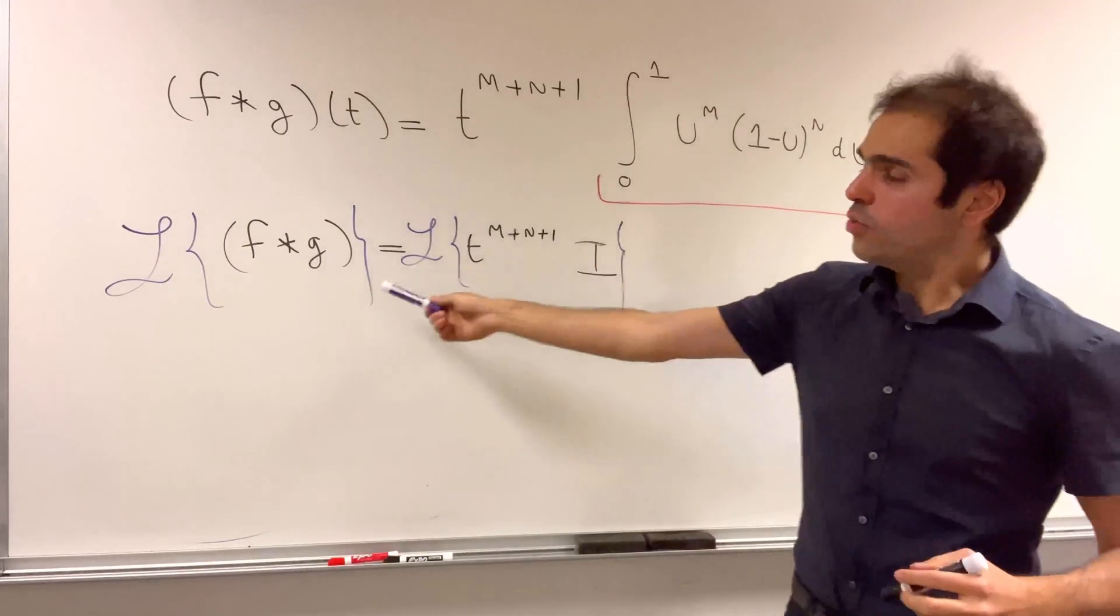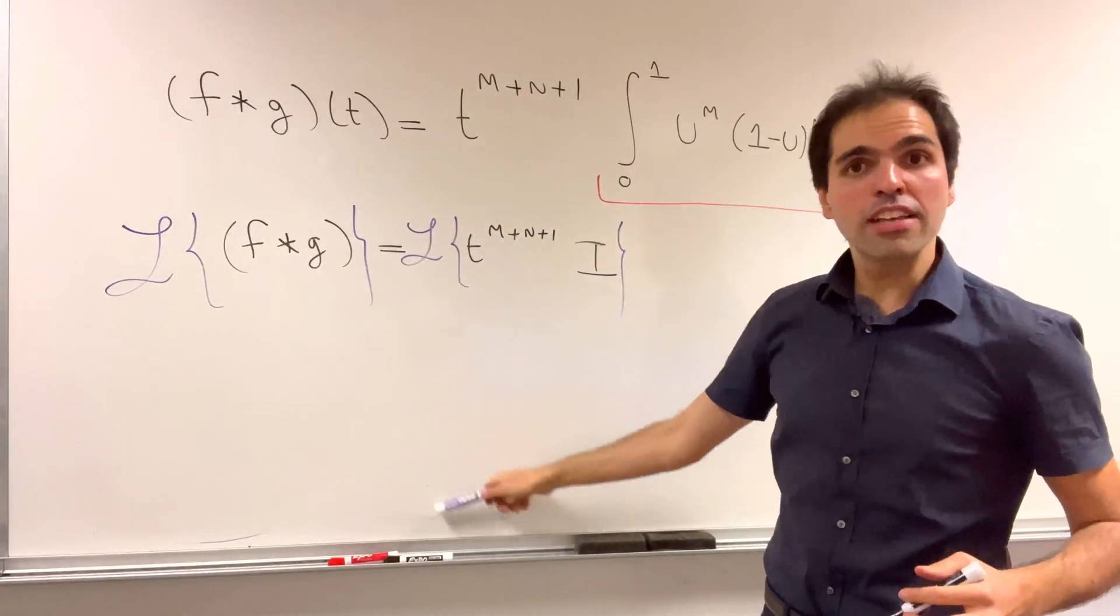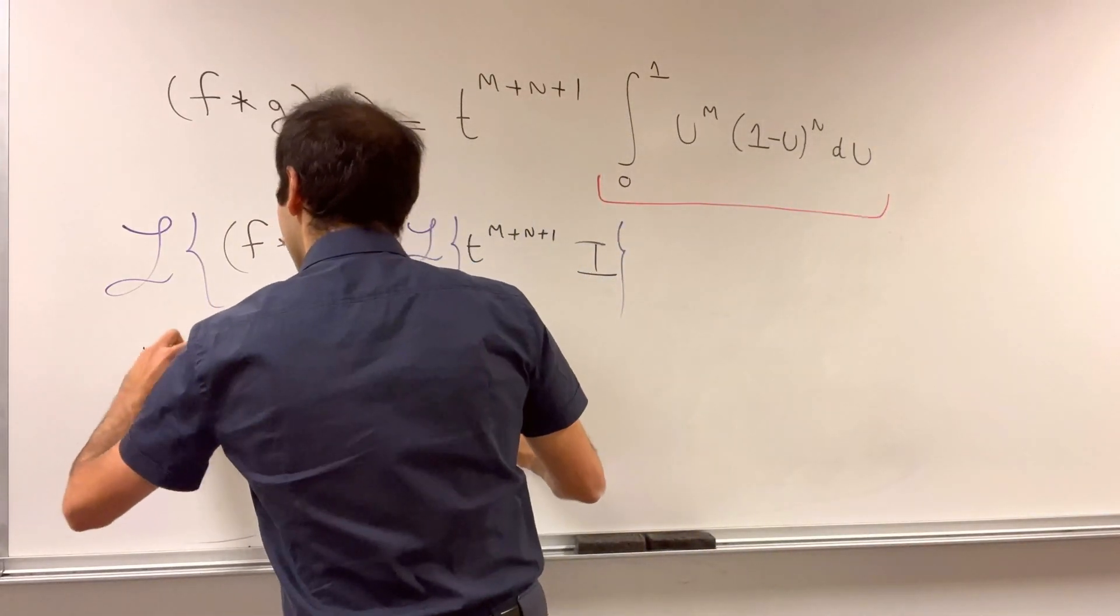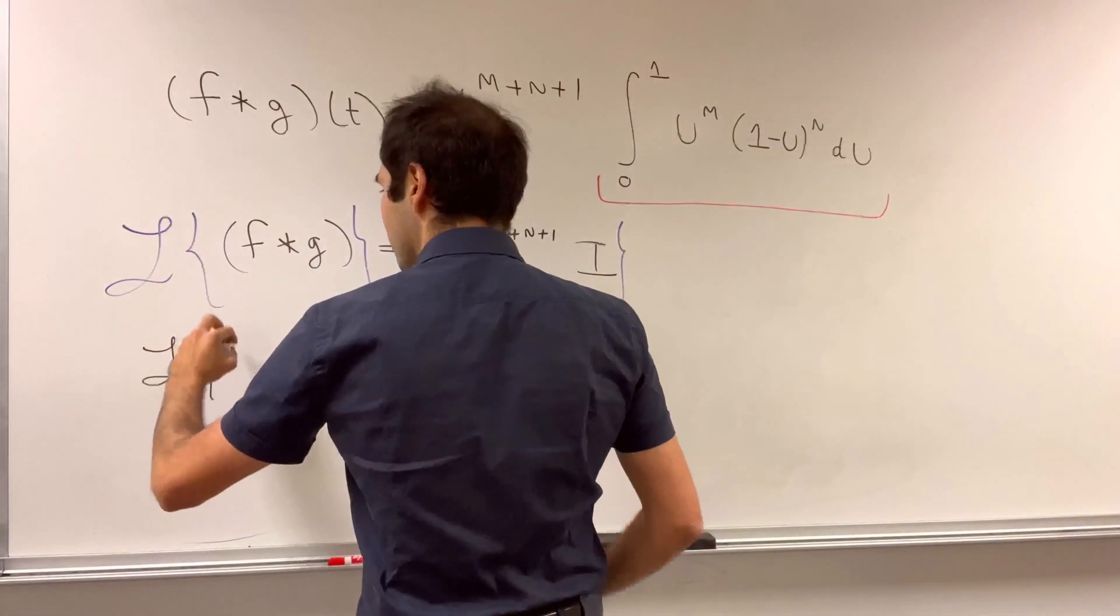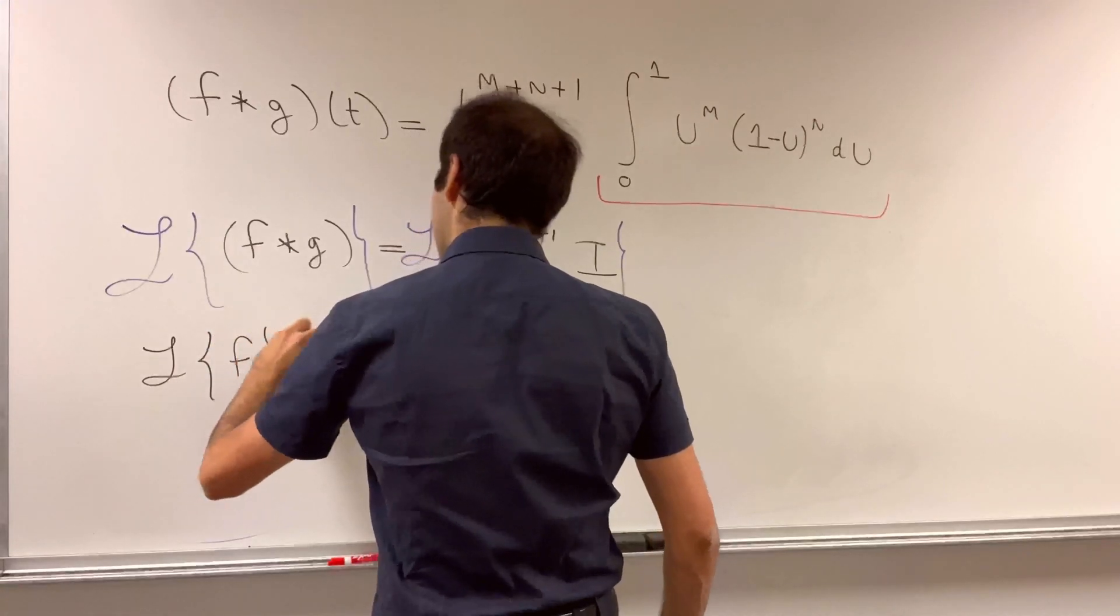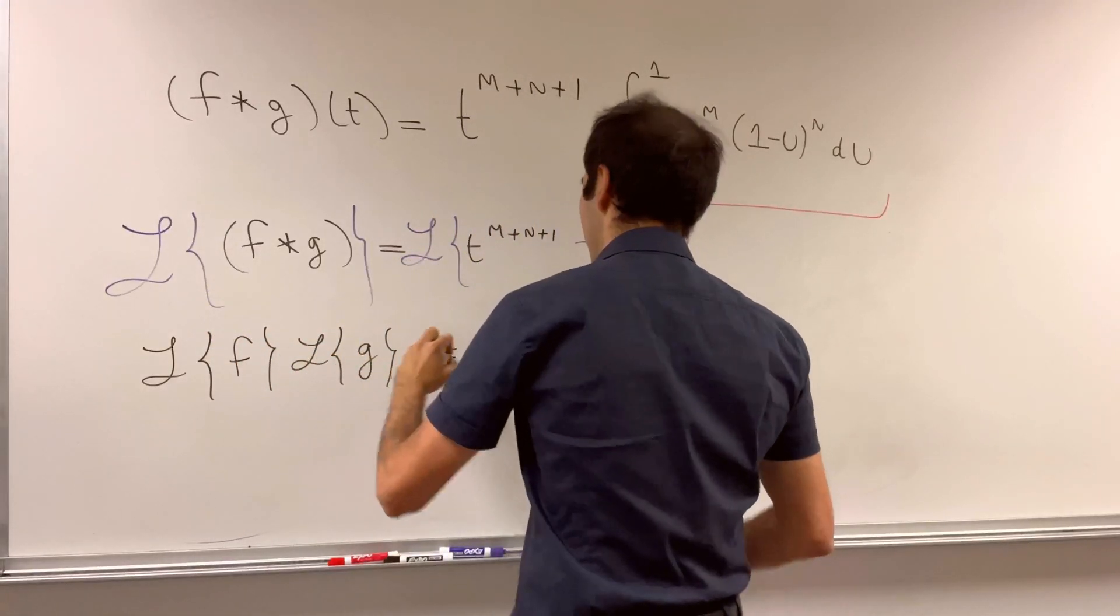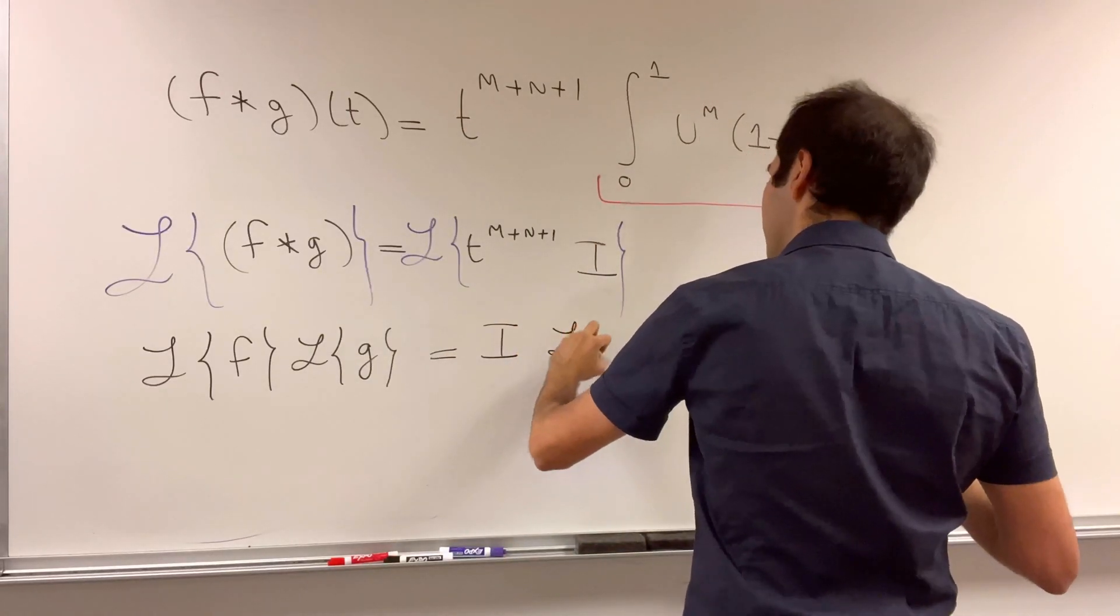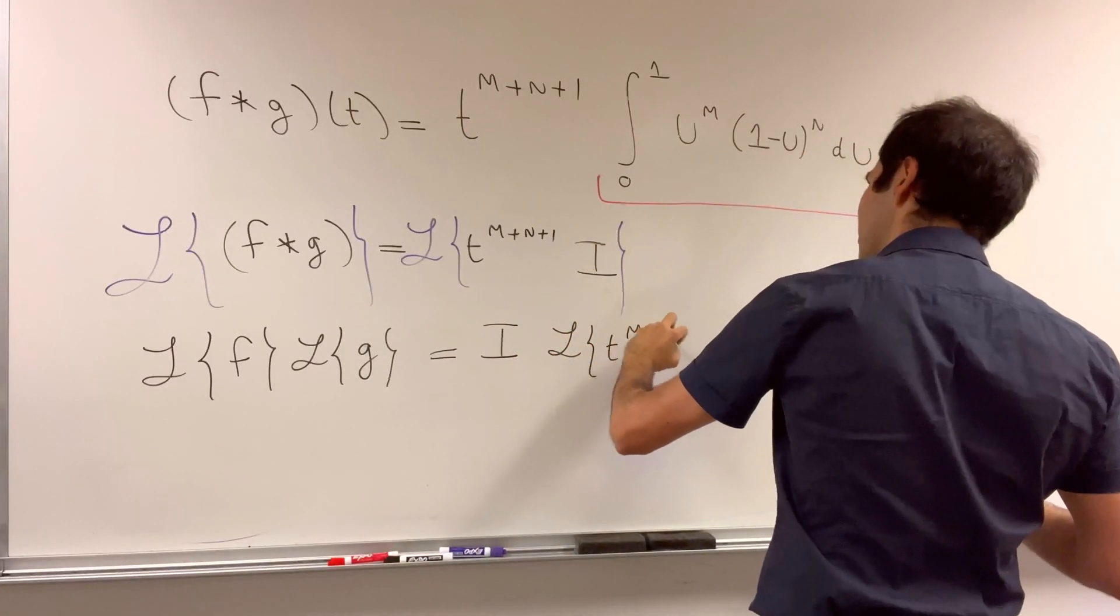So apply fancy L to the left hand side and to the right hand side. And then what we get, Laplace transform of convolution is just a multiplication of Laplace transforms. So L of f times L of g, and I is just a constant, so I times L of t to the m plus n plus 1.